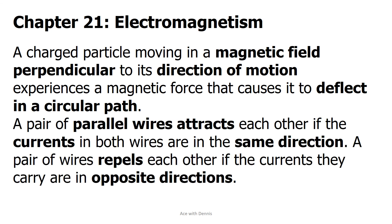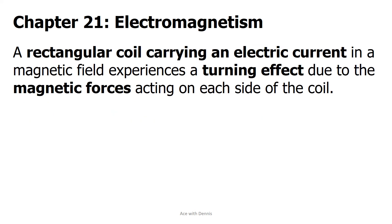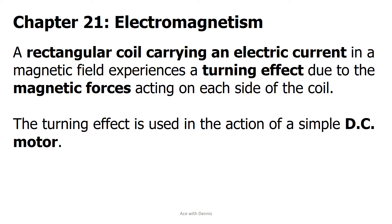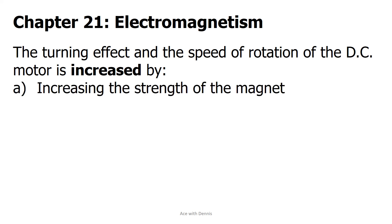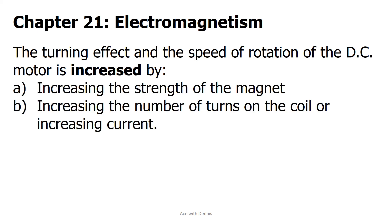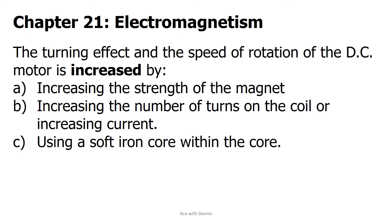A pair of parallel wires attracts each other if the currents in both wires are in the same direction. A pair of wires repels each other if the currents they carry are in opposite directions. A rectangular coil carrying an electric current in a magnetic field experiences a turning effect due to the magnetic forces acting on each side of the coil. This turning effect is used in the action of a simple DC motor. The turning effect and speed of rotation of the DC motor is increased by: increasing the strength of the magnet, increasing the number of turns on the coil, increasing current, or using a soft iron core within the core.